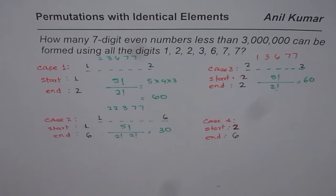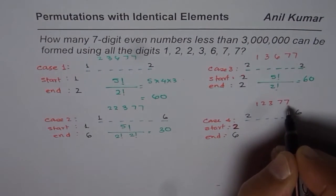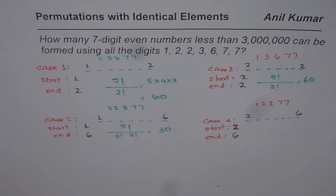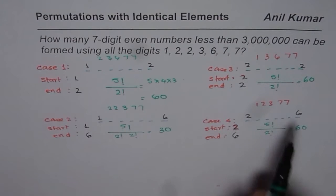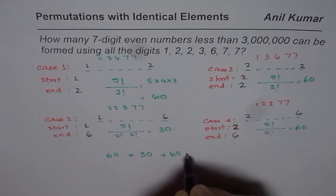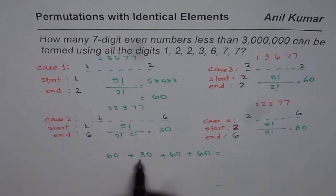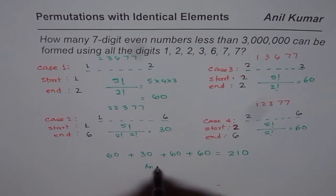The last case here is set of 7 with 2 and 6 as fixed. Next, we need to fill in the numbers which are 1, 2, 3, 7, 7. 7 repeats and therefore, the combinations of all these will be 5 factorial divided by 2 factorial and that is also 60. So in all, if you add all the 4 cases, then the result will be 60 plus 30 plus 60 plus 60, which is 90 plus 60, 150 plus 60, 210. So our answer is 210.